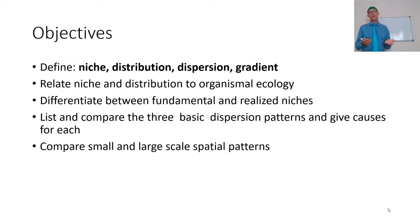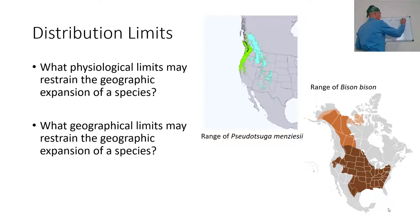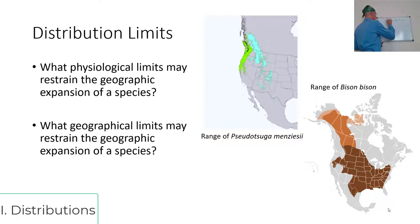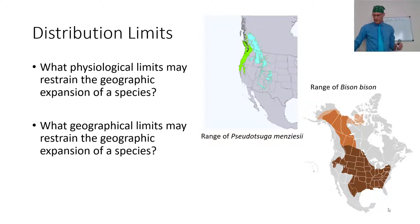What's large and what's small really depends on the organism — there's a difference between a bacteria and an elephant. So, distribution: what physiological limits are actually restraining the geographic expansion of a species? Take, for example, Douglas fir, Pseudotsuga menziesii.